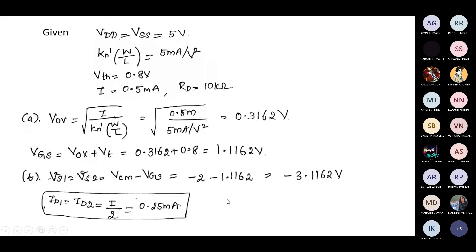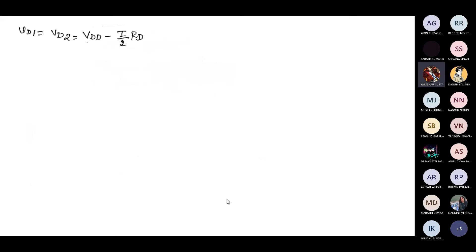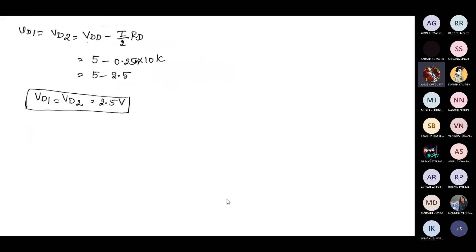Next, we calculate the voltage at the drain. The drain voltage equation is VDD minus the drain current times RD. Since the drain current is the same in both transistors in common mode, VD1 equals VD2 equals VDD minus I by 2 times RD, which gives 2.5 volts.